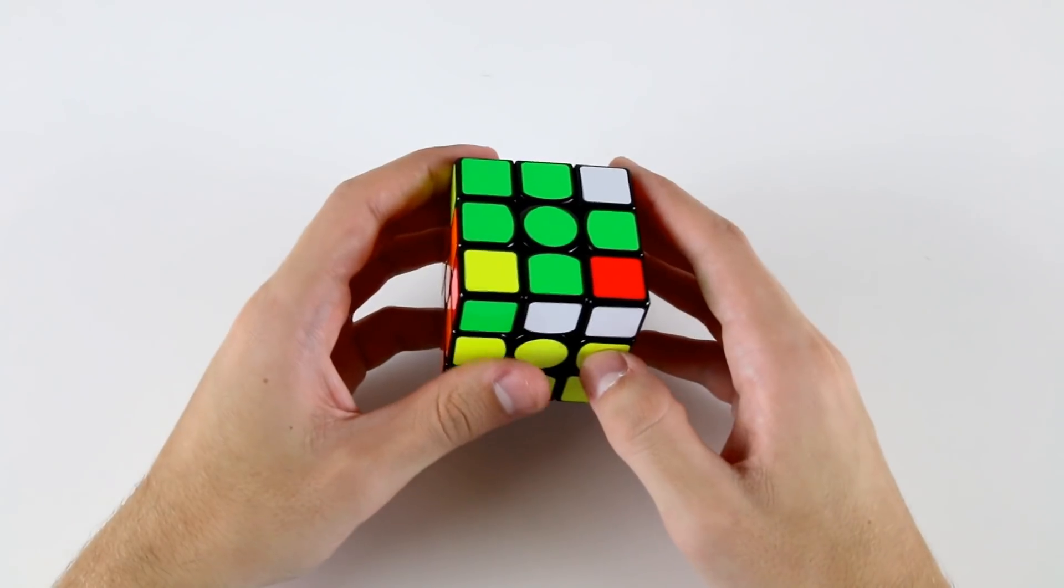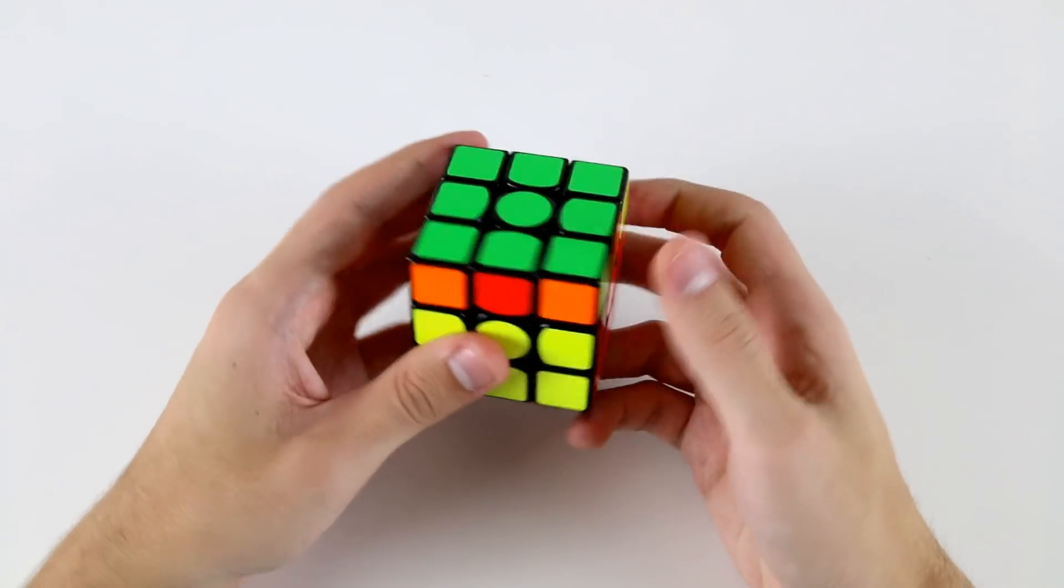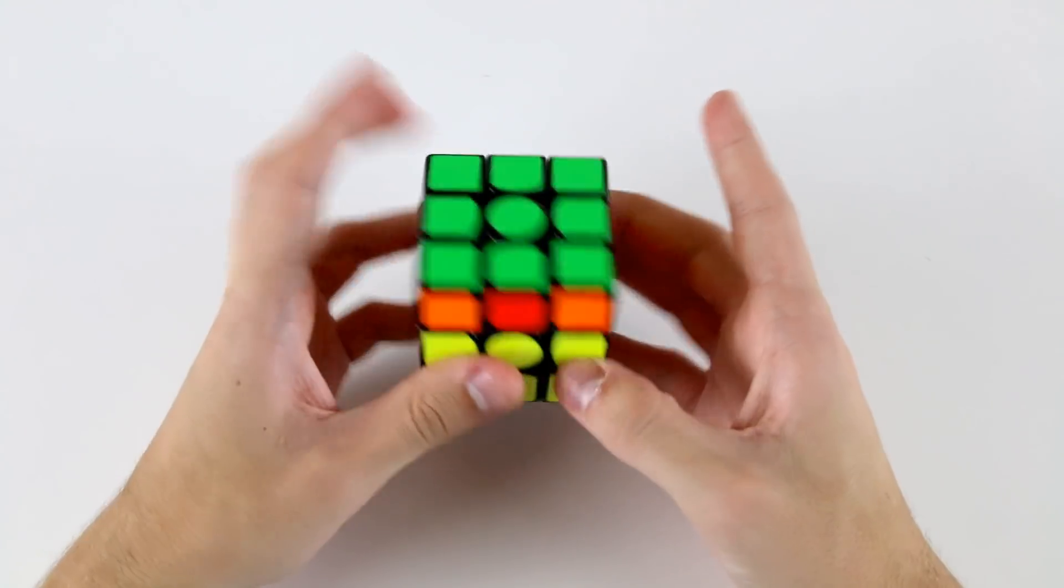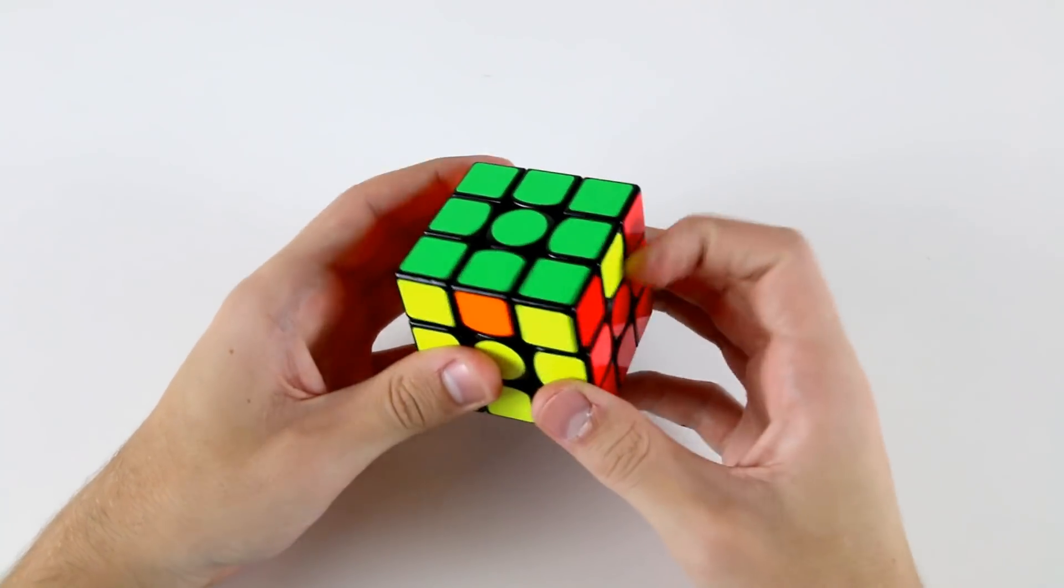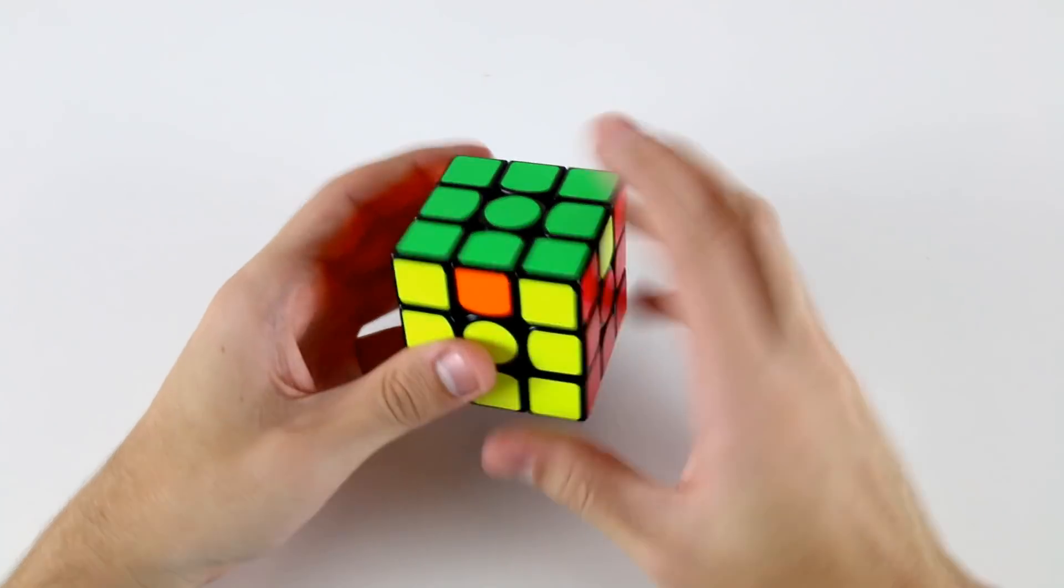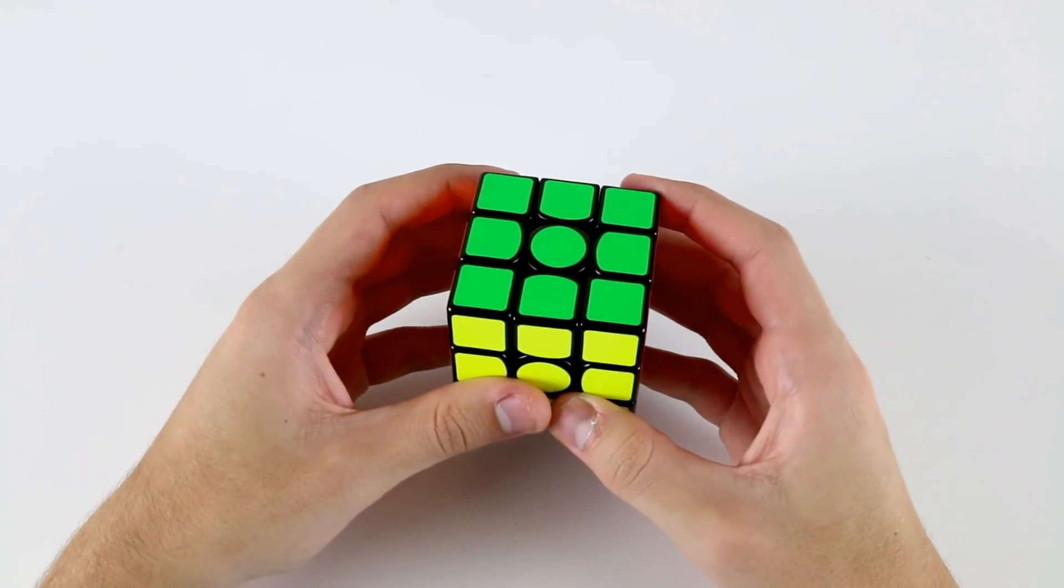Then I've got OLL and then PLL. I'm really good at executing this PLL, but it probably makes sense to do a U and then execute the U perm from that angle.